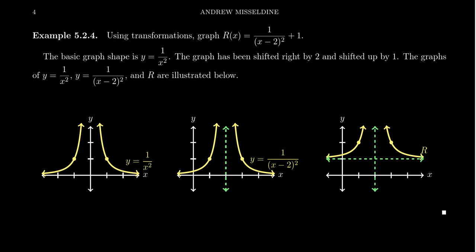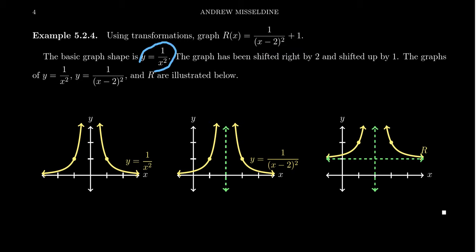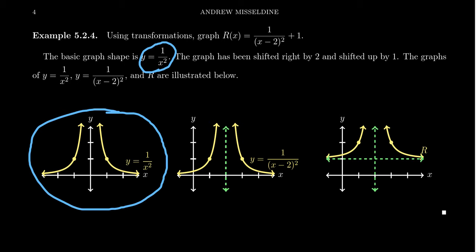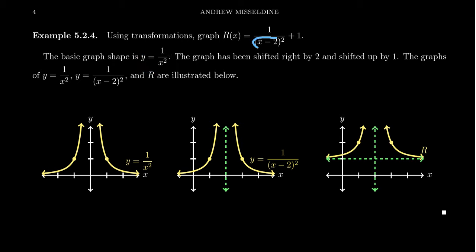Let me give you an example of how we can graph a rational function using transformations. Graph the function r(x) equals 1 over (x minus 2) squared plus 1. Notice that fundamentally we've taken the graph y equals 1 over x squared and transformed it. What are the transformations in play here? The denominator has x replaced by x minus 2, which suggests a shift right by 2 units.